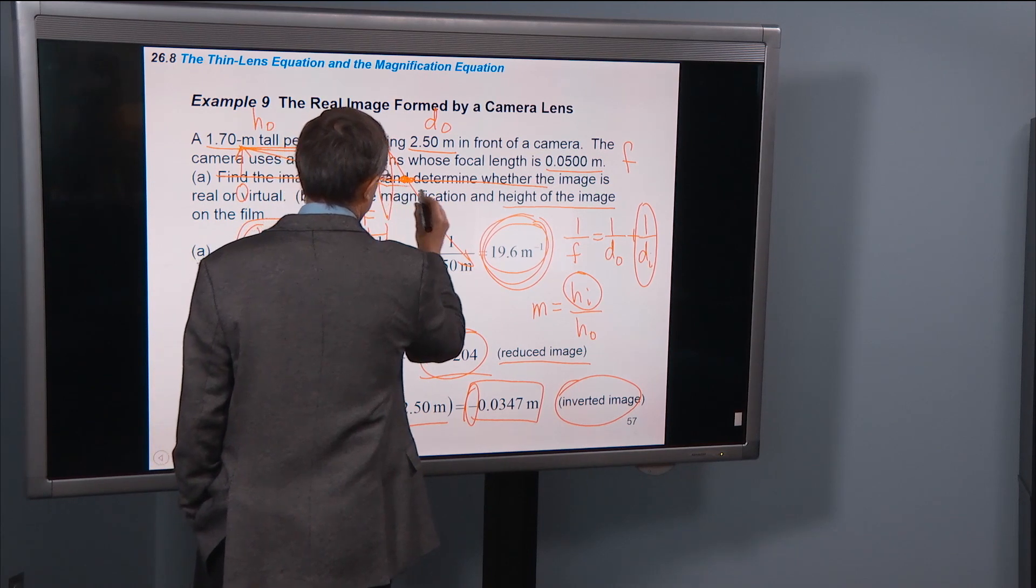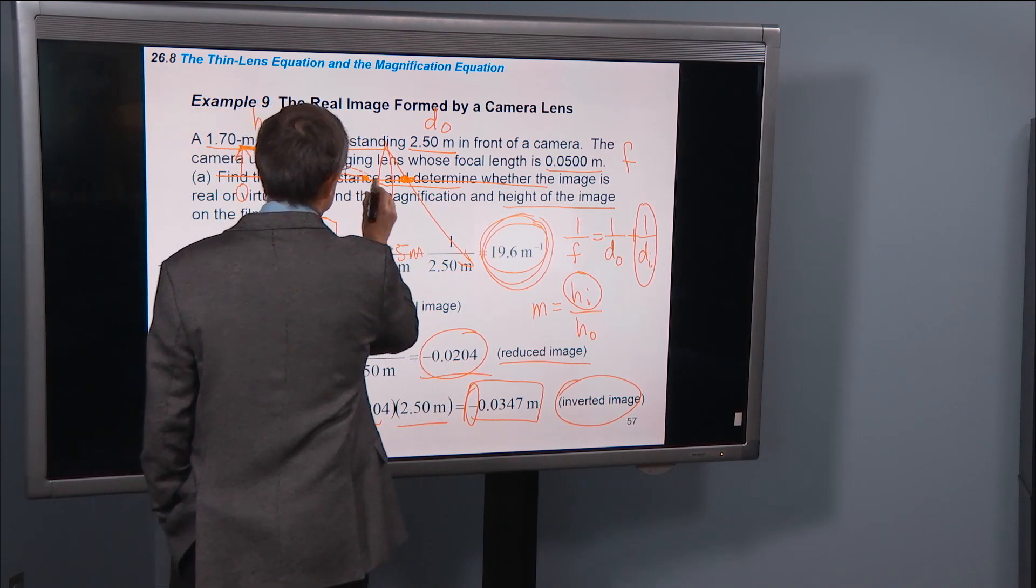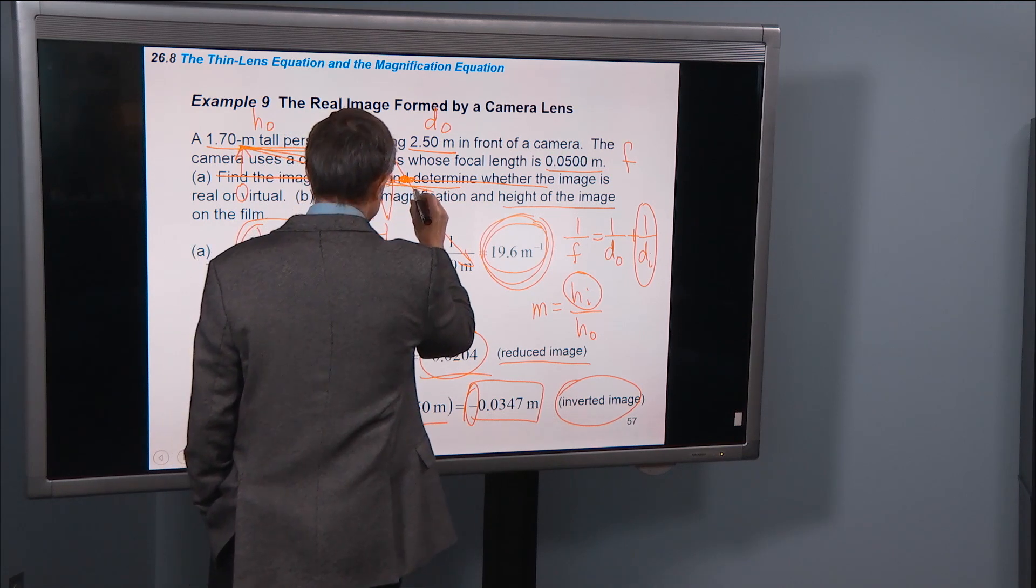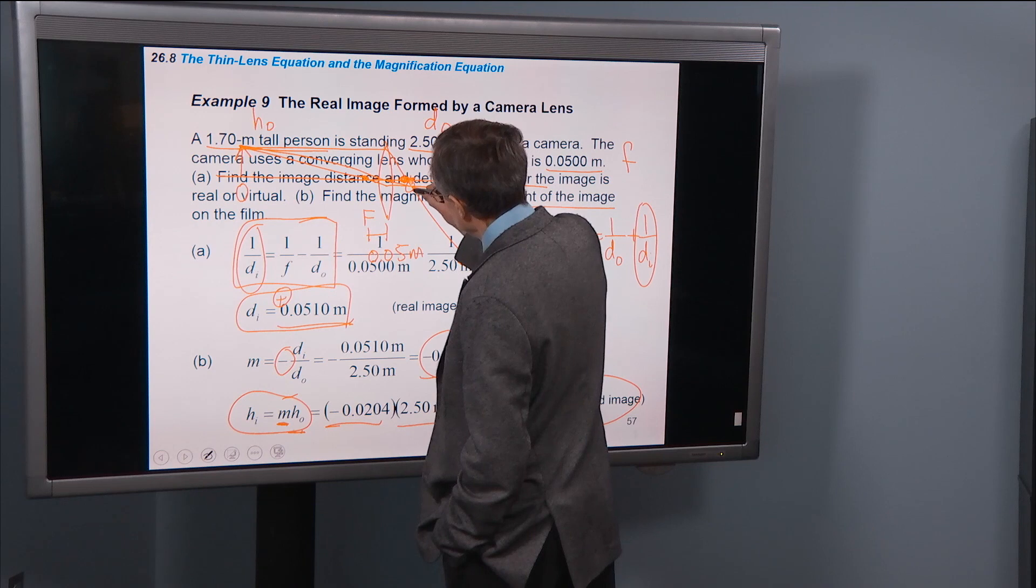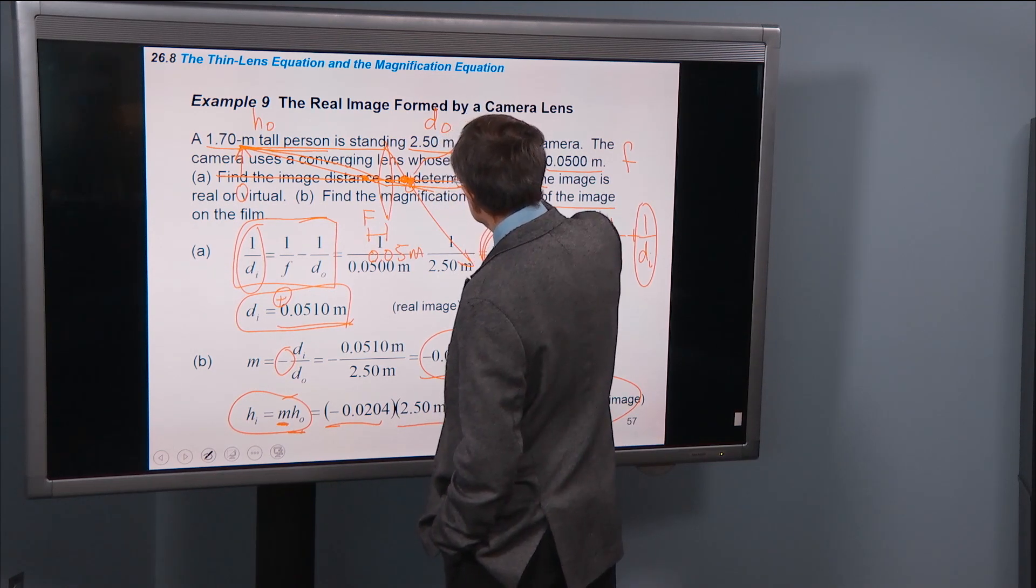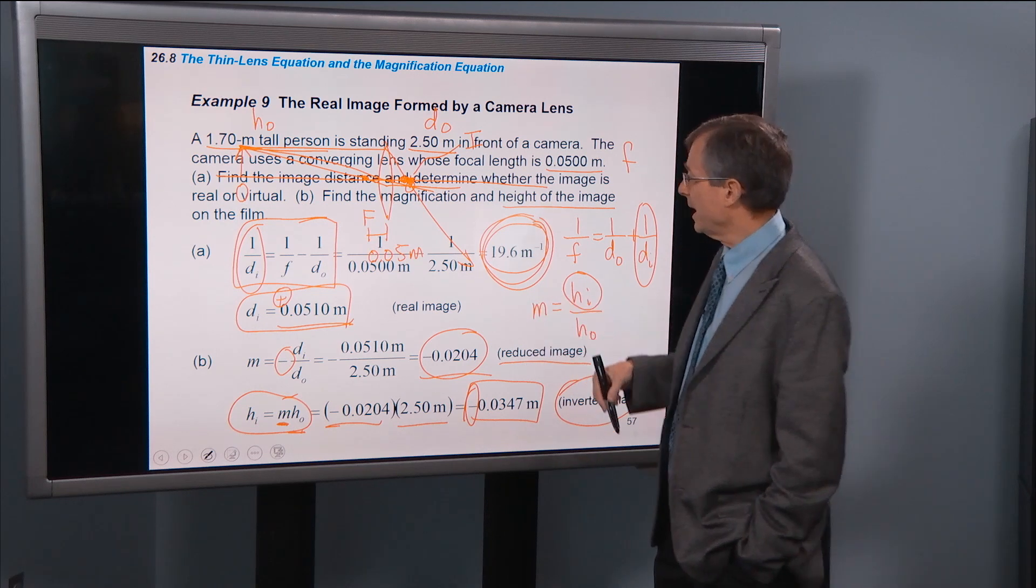coming off as a paraxial ray. And then a third ray coming right smack through the middle of the lens. Looks like these three rays are converging right here. So there's going to be a little tiny image right there.